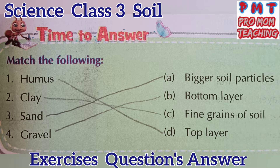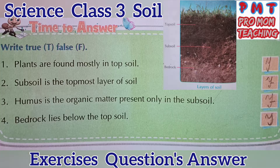And it is the hardest layer of soil, known as bedrock. Write true or false. First: plants are found mostly in topsoil — it is true. Next: subsoil is the topmost layer of soil — it is false. The topmost layer of soil is topsoil, not subsoil.